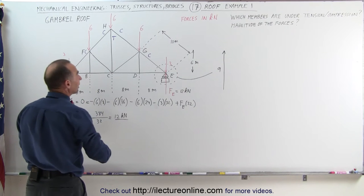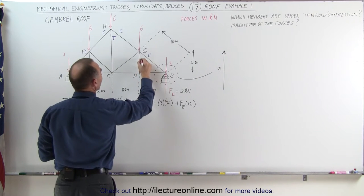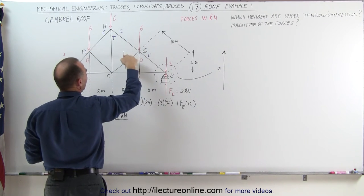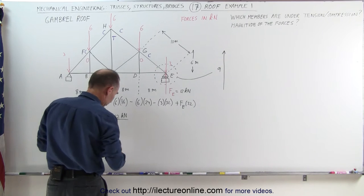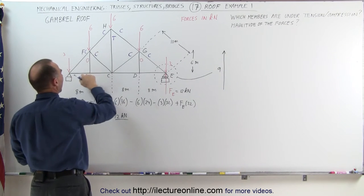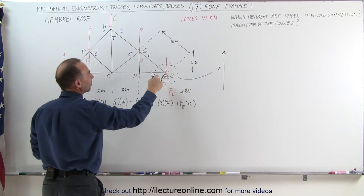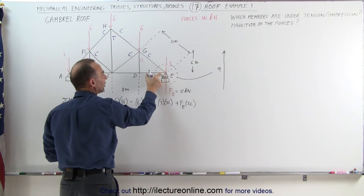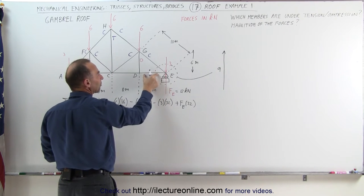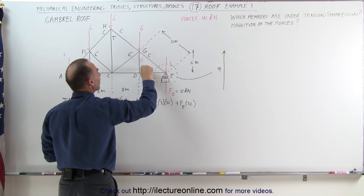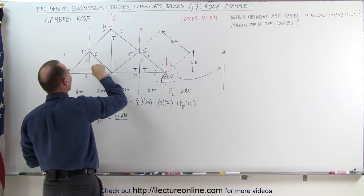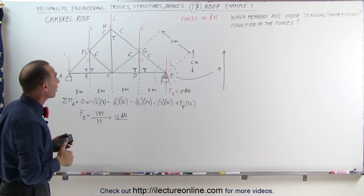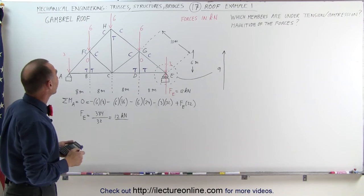The forces on those two interior vertical members are zero. The bottom tension member and the upper chord compression members have now been identified. The slanted top members are under compression, and the four bottom horizontal members are all under tension. We've now determined all the tension and compression designations for every member of the roof truss.